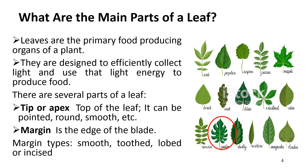As we all know, leaves are the primary food-producing organs of the plant. These are green because of the presence of a photosynthetic pigment called chlorophyll. A leaf has tiny pores or openings called stomata where gas exchange takes place.